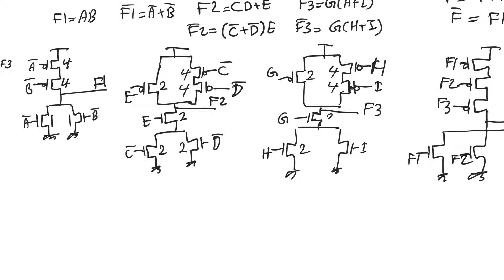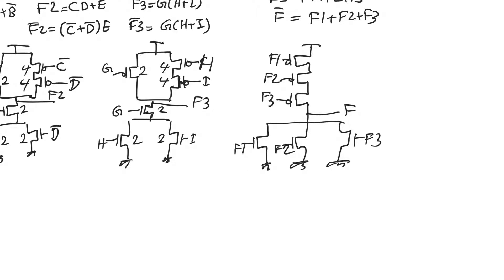Gate f3 is identical to f2 and has the same sizing. The three-input NOR gate f has three paths in the pull-down network, and the problem requires the worst case resistance to be half that of f1, f2, and f3. Therefore the W/L should be doubled, so each NMOS transistor is sized at two. The three series PMOS transistors in the pull-up network must provide an equivalent aspect ratio of four — not two — so each is sized at 12, since 12 divided by 3 equals four.